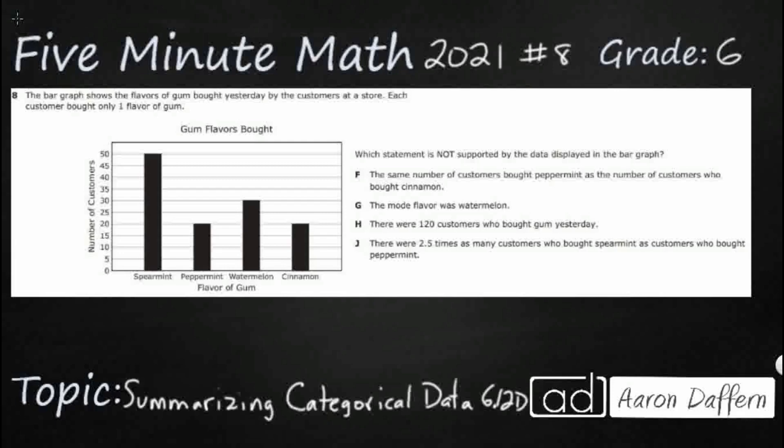Hello, and welcome to 5-Minute Math. Today we are looking at the 6th grade concept of summarizing categorical data. This is standard 6.12d in the great state of Texas, and we are using item number 8 of the 2021 released STAAR test.